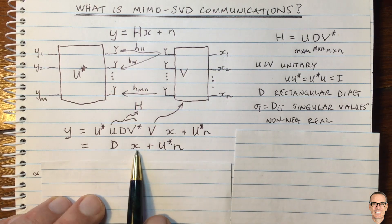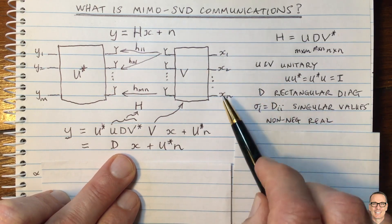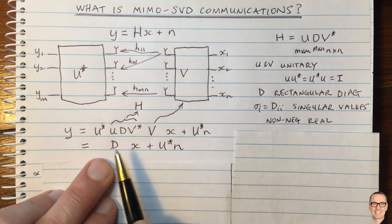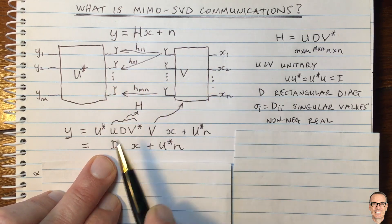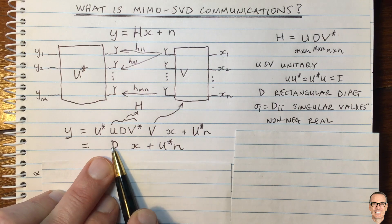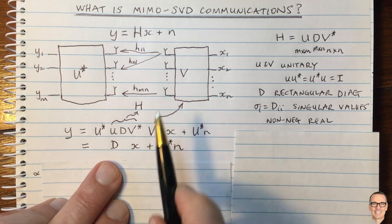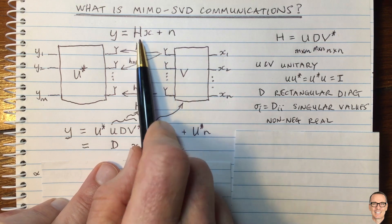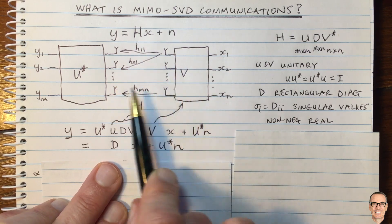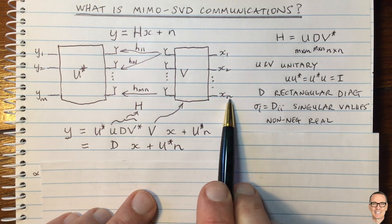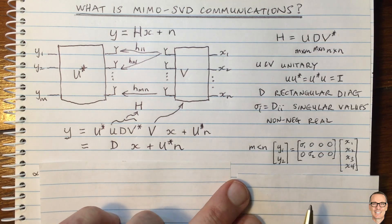Now our input symbols, after these operations, are effectively going through a diagonal channel. Let's think about this — especially for the case where we don't have an equal number of antennas at the transmitter and receiver, i.e., M does not equal N. Let's think about those scenarios, starting with when M is less than N.